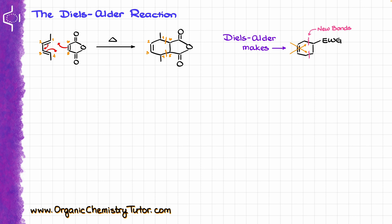Another important thing to keep in mind: if I number my atoms as 1, 2, 3, 4, 5, and 6, atoms 1 through 4 are going to be coming from our diene.